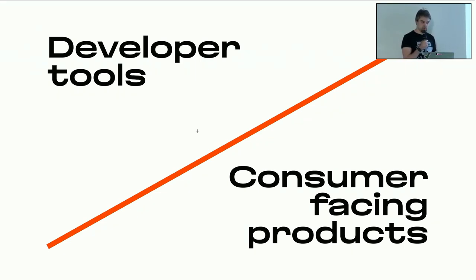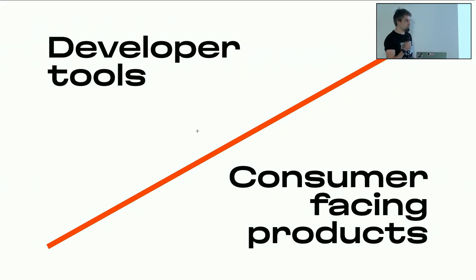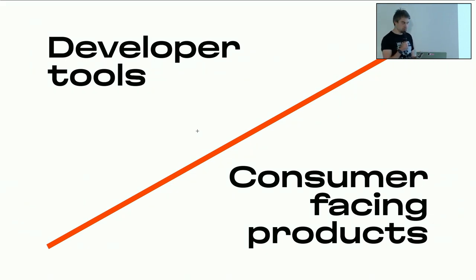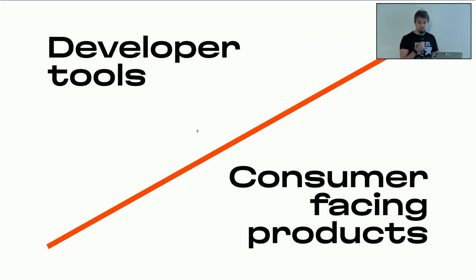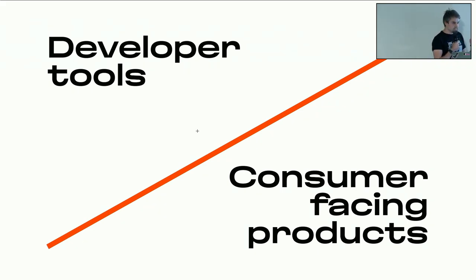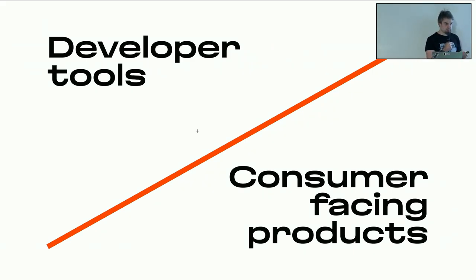Moreover, for a long time, developers have been minorities without purchasing power. They've been like strange geeks, loving to install Ubuntu and type some spells in their terminals. But nowadays, developers are actually quite a big chunk of the market with a lot of money. So as designers, we can't sell ripoffs anymore. We can't apply the same principles that we've been using for decades designing consumer-facing products.